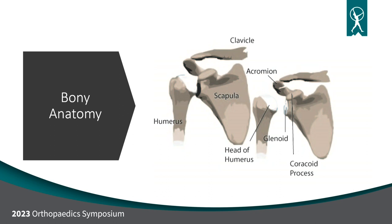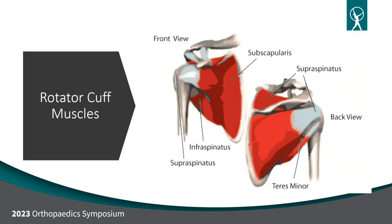Starting with anatomy and bony structure: you have your humerus, which forms the ball of the shoulder joint, and your scapula, which creates the glenoid. The main articulation is the glenohumeral joint. You have your clavicle up top, and your acromion, which is an outgrowth of the shoulder blade that goes above the humerus. We have four rotator cuff muscles. From the front, the subscapularis forms the tendon on the anterior surface of the humerus. From the back, the supraspinatus and infraspinatus, and the smallest muscle, the teres minor.